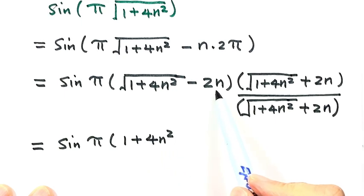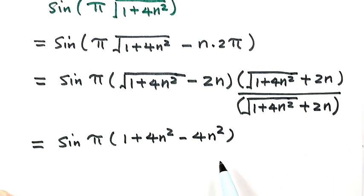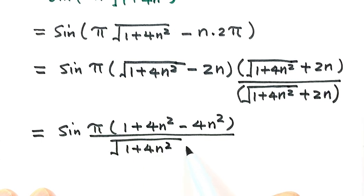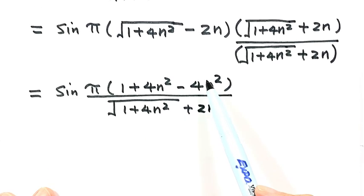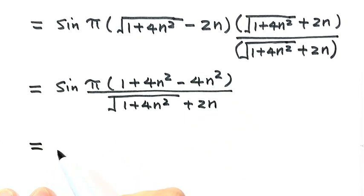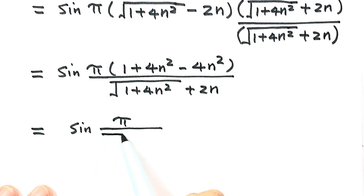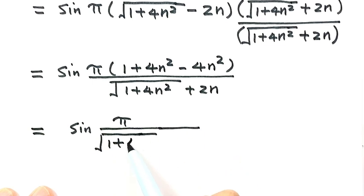Then the second term squared is 4n², so minus 4n². The denominator is √(1 + 4n²) plus 2n. The 4n² terms cancel, leaving sine of π times 1 over (√(1 + 4n²) + 2n), so on top just π, and on the bottom √(1 + 4n²) plus 2n.